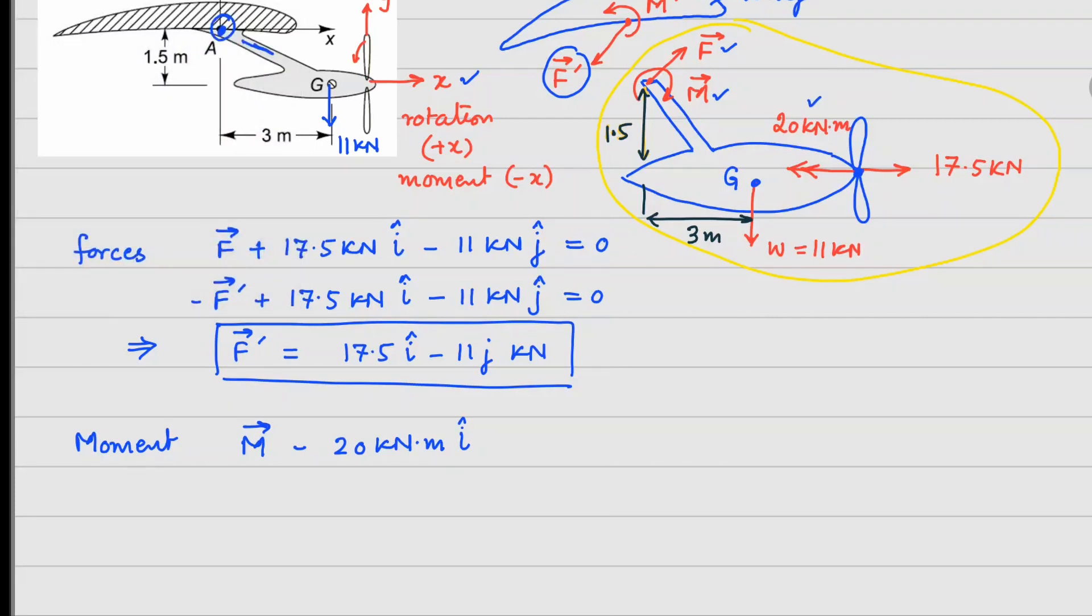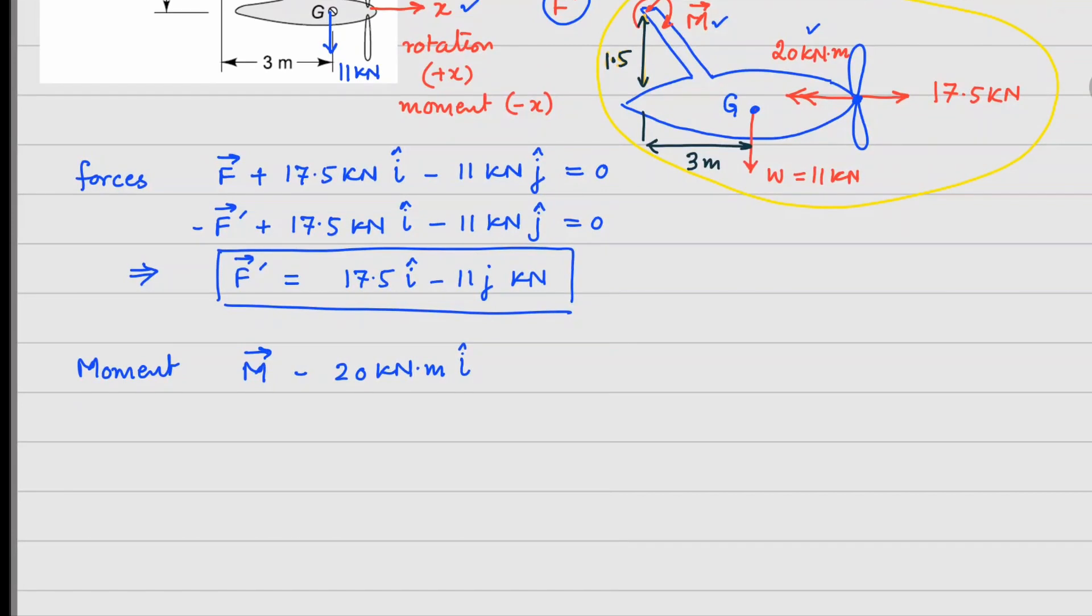So now for a moment, let us use that R cross F that we have learned earlier. So for your weight, if you are taking a moment about this point A, then we can write your R vector as 1.5 negative j cap because you are going down plus 3 i cap because you are going in the right side direction, and the force here is minus 11 kN j cap. And remember, these dimensions are in meters.